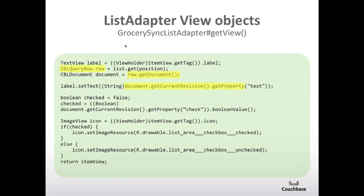This is what gets called back in your list adapter. You'll be passed a position parameter, and from that you can get the CBLQueryRow object. From the CBLQueryRow you can get the document. From the document, you call getCurrentRevision().getProperty() with the field name to get that property — in this case the 'text' field, which had the 'shaving cream' text. We also get the 'check' property and show the appropriate image. Then we add that label with the text property and the icon, add that to the item view, and return it.